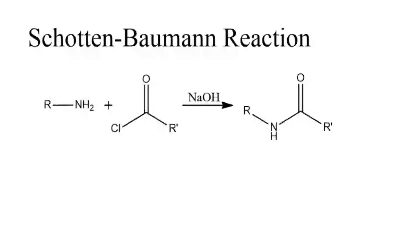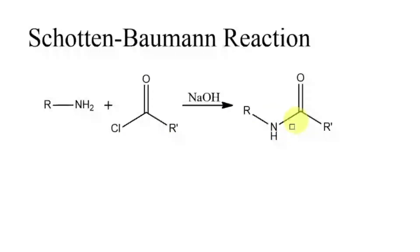Hi and hello all. Let us talk about the Schotten-Baumann reaction. In this reaction, an amine reacts with an acid chloride and forms an amide in the presence of a base. The presence of base is very important; otherwise, the yield will be very low.